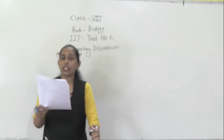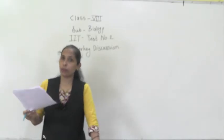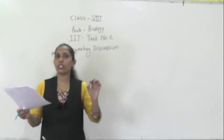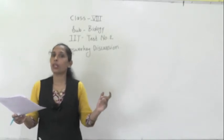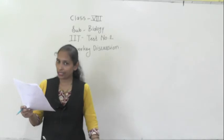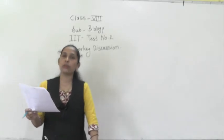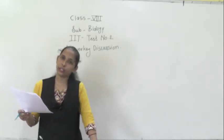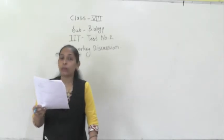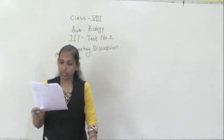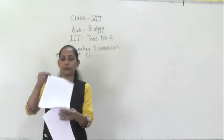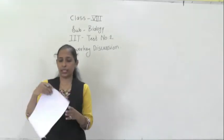Amoeba is a unicellular organism — the single cell itself is one organism — and the amoeba cell changes shape. Also, WBCs present in our body also change shape. So option number C is correct, that is both of these.